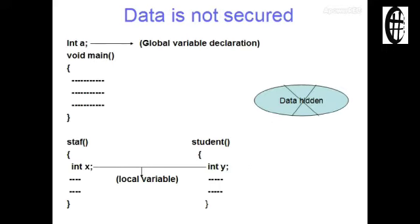In C language, we can use global variables in the main function. Any function can access these variables. But we cannot hide the data, so the data is not secure in C.